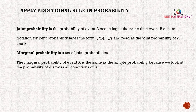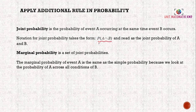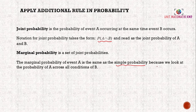Applying the additional rule in probability: joint probability is the probability of event A occurring at the same time event B occurs. The notation is P(A intersect B), read as the joint probability of A and B. Marginal probability is a set of joint probabilities — the marginal probability of event A is the same as the simple probability, as we look at P(A) across all conditions of B.